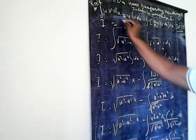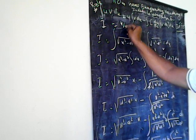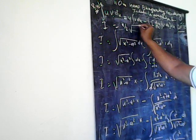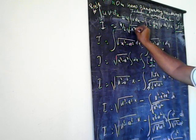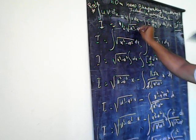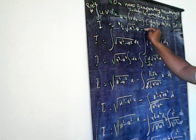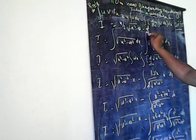2 will be divided. So I is equal to x by 2 into under root x square minus a square, minus a square by 2.